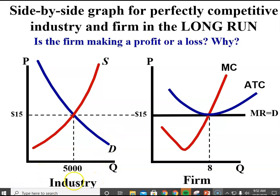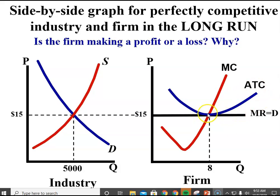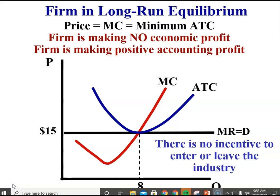Here are side-by-side graphs for the industry or the market — you're always going to show supply and demand on that graph — and then for an individual firm. This graph represents long run equilibrium. The firm is not making an economic profit, nor are they making an economic loss. They're earning what we refer to as a normal profit. And we know that because the price, or the demand curve and the marginal revenue curve, is equal to the marginal cost at the lowest point on the ATC curve.